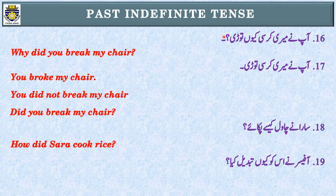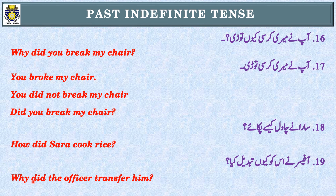Sentence number nineteen: 'Why did the officer transfer him?' Identification of tense: past indefinite tense. Subject: 'the officer.' Simple: 'The officer transferred him.' Negative: 'The officer did not transfer him.' Interrogative: 'Did the officer transfer him?' Then place 'why' before 'did': 'Why did the officer transfer him?' Never forget to put a question mark at the end of all interrogative sentences.